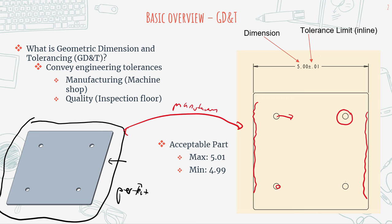GD&T is a way to convey engineering tolerances, because in physical reality, through the machining process, you will have imperfections and dimensions that are slightly off — no machine is going to be perfect. So the question becomes: to what extent is a part considered to be an acceptable part?